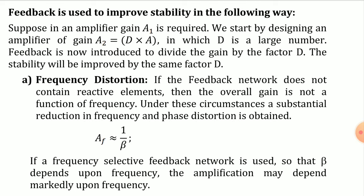Suppose we have to design an amplifier of gain A1. We start by designing an amplifier of gain A2, which should be D times A, where D is a large number. Feedback is introduced to divide the gain by the factor D. The stability will be improved by the same factor D as the gain is reduced, and other parameters also improve by factor D.